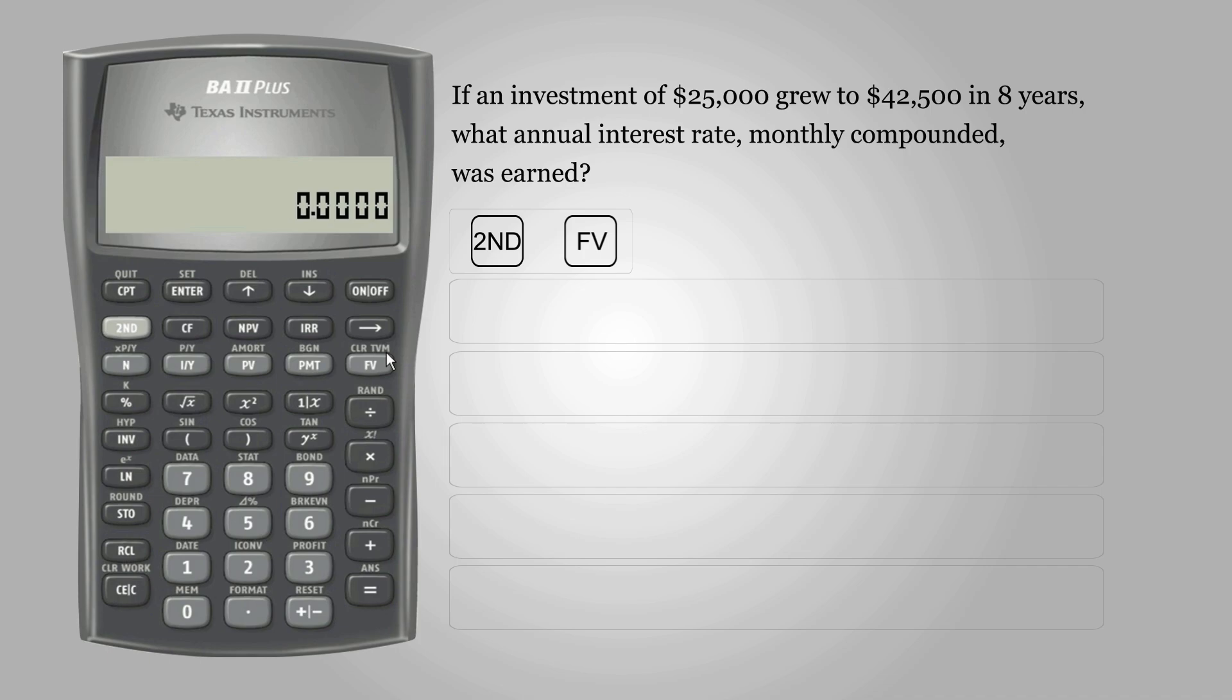Then we need to set CY, which is the number of compounding periods per year. So press 2nd, IY and then the downward arrow to set the CY. Since the question asks for monthly periods, the CY is 12 and enter.